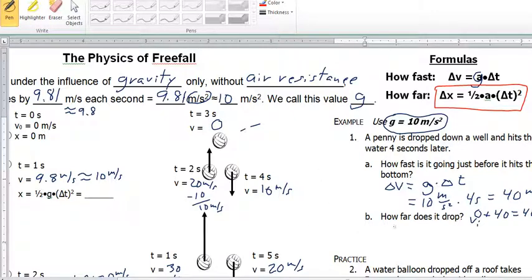So, let's take a look at the example again. How far does it drop? So we can say delta x, and that equals 1/2 times rate of acceleration times time accelerating squared.